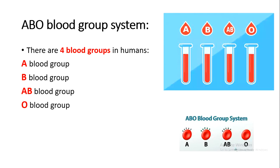These 4 blood groups differ in the constitution of the blood — they differ in their components of red blood cells and plasma. Why do people have different blood groups? What does having a particular blood group mean?